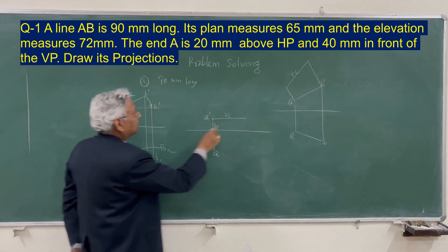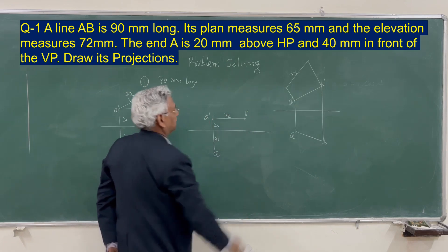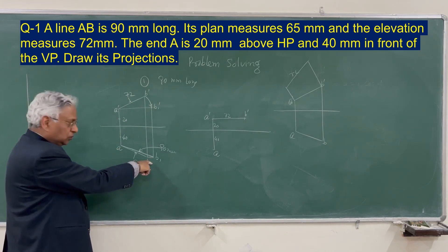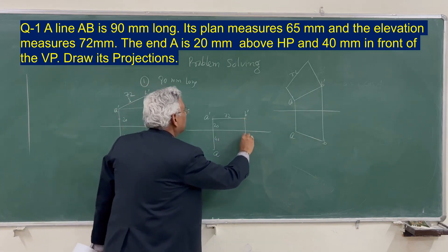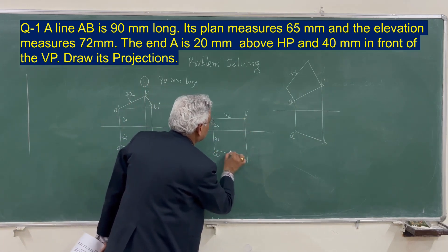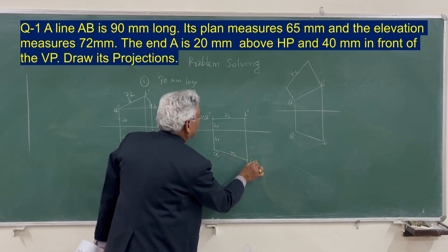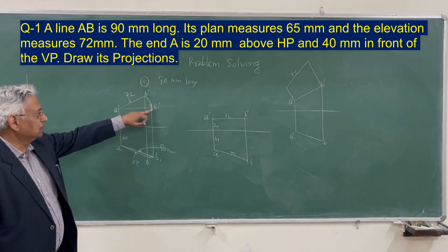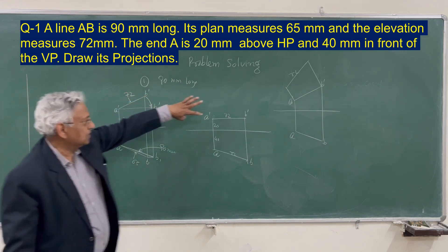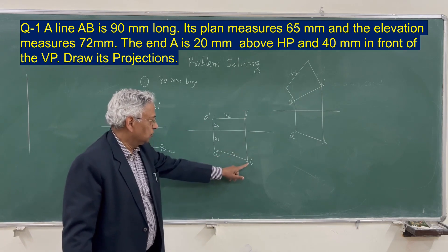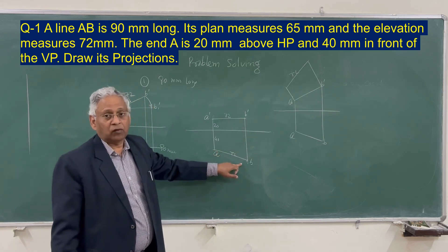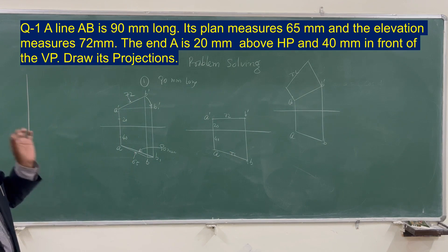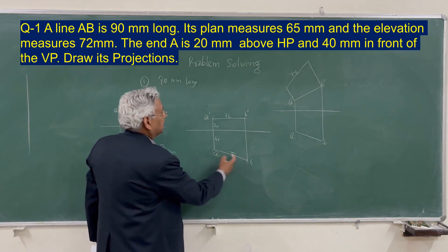Because the true length is D one, let us say the elevation is parallel to the ground. B dash will lie somewhere on this line which is parallel. In that case, your plan will give the true length. So take this elevation as 72 mm — this is point B dash. In this position the line is in true length in the plan. So draw a perpendicular here and measure the true length here to get B.